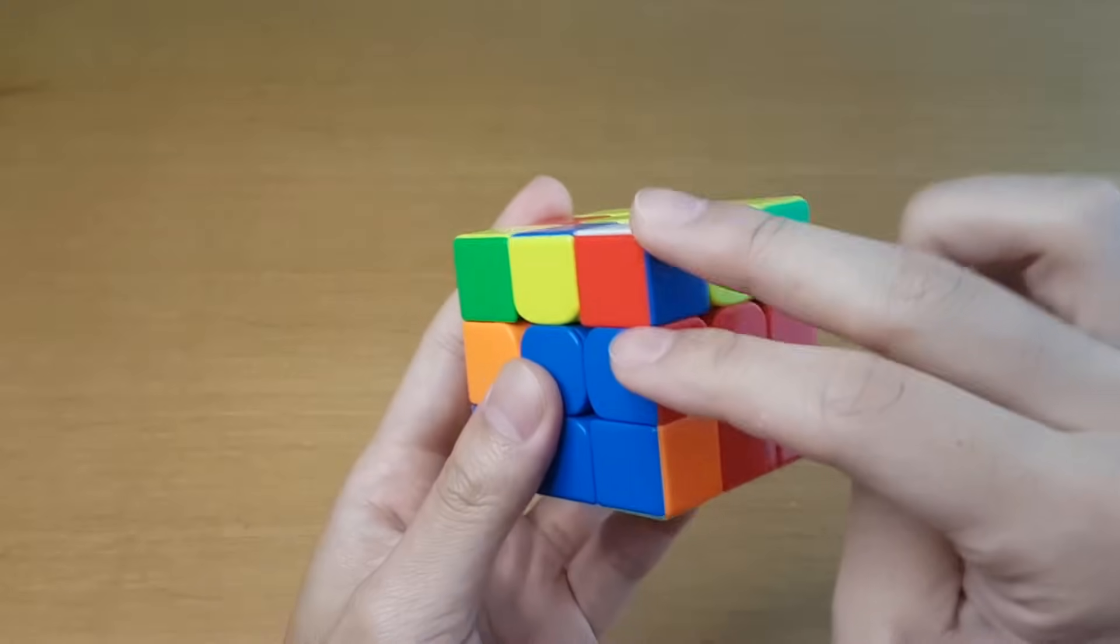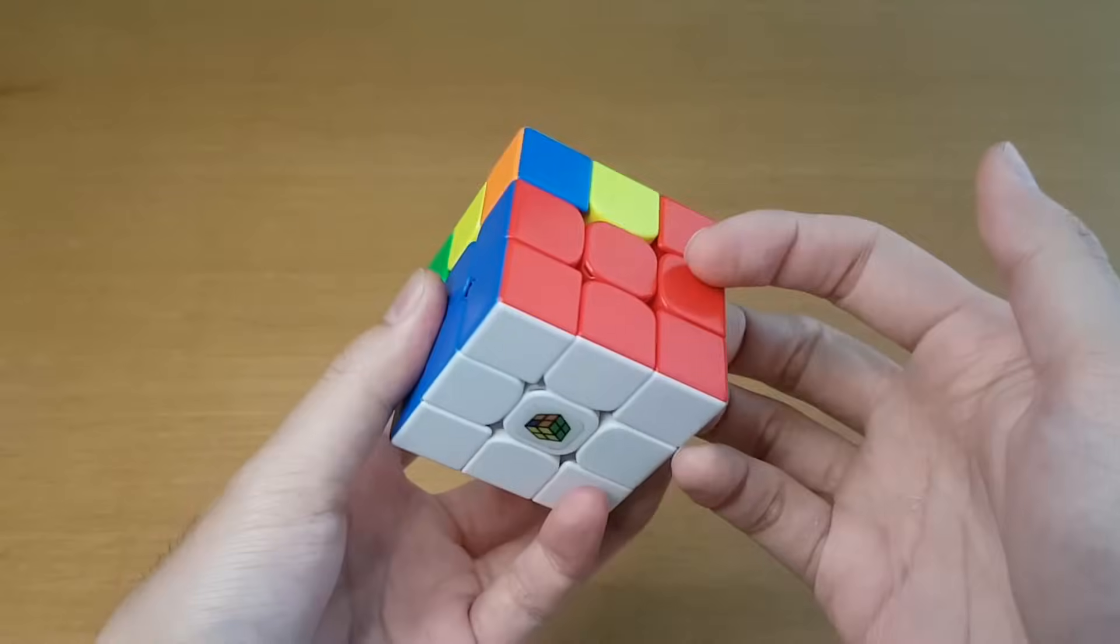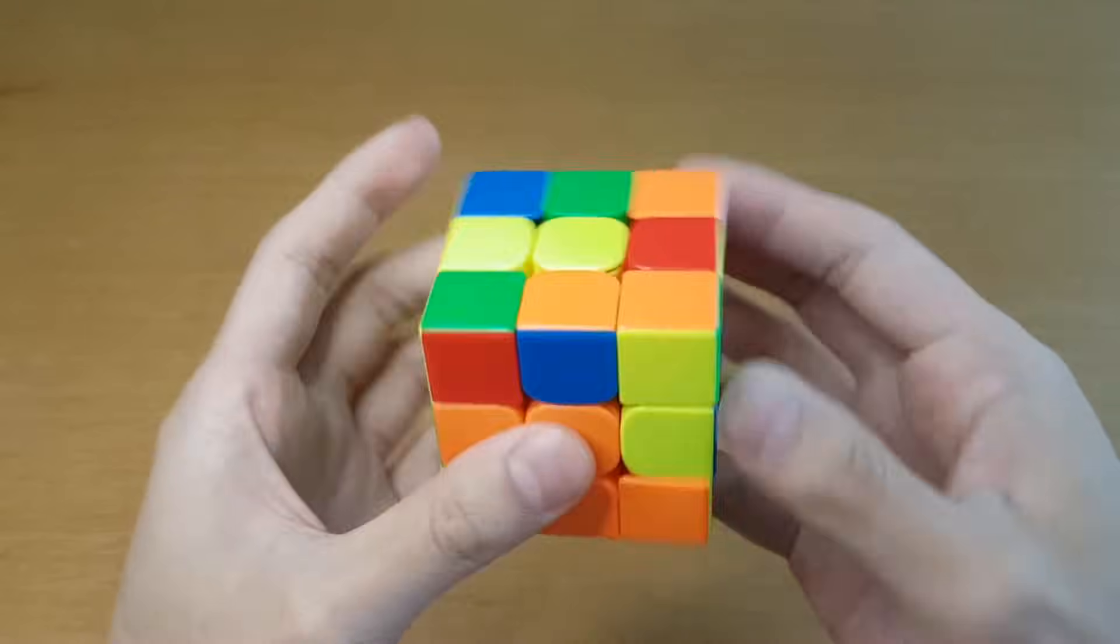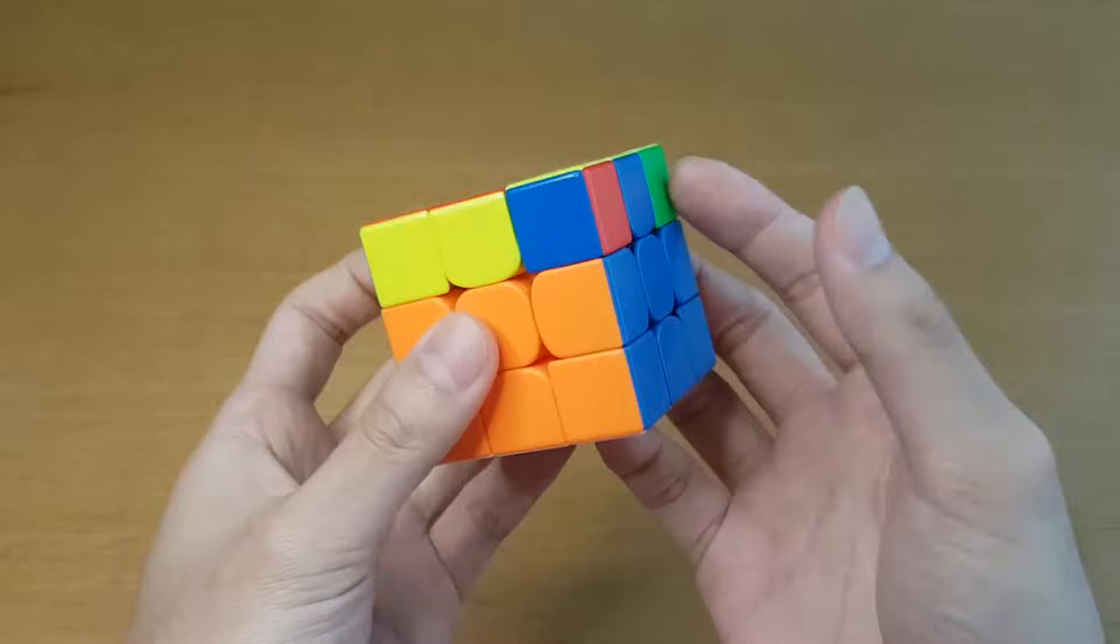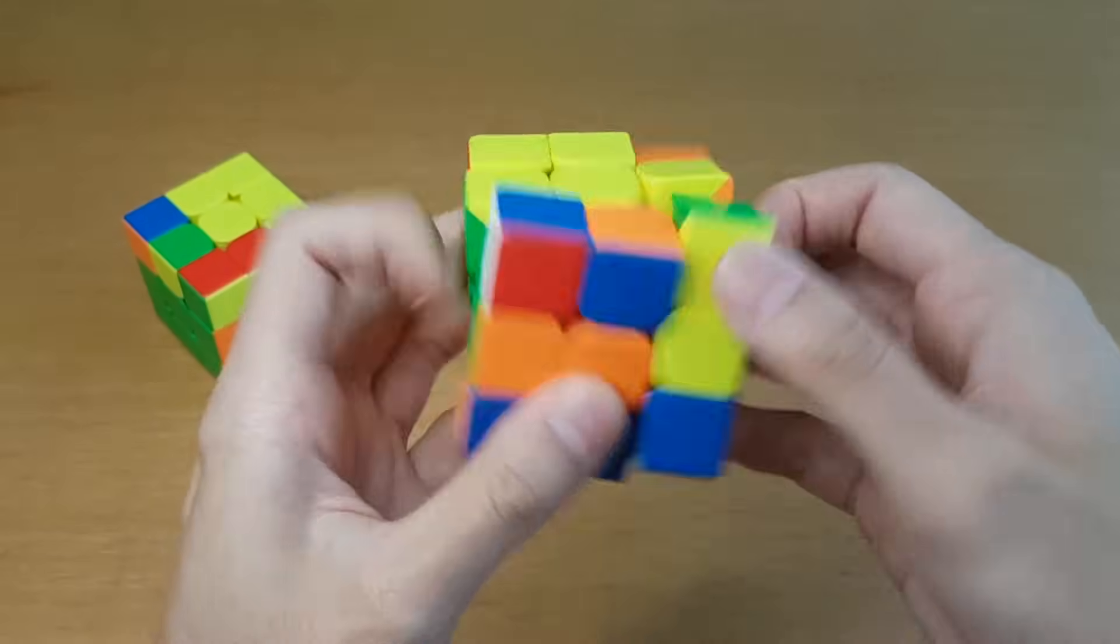When most people get two bad F2L cases in a row, they just solve one of them and then solve the other one. That was a lot of moves, and instead, why don't you just do this?